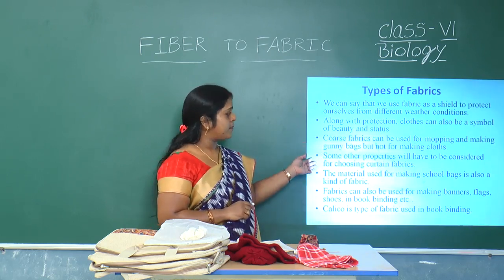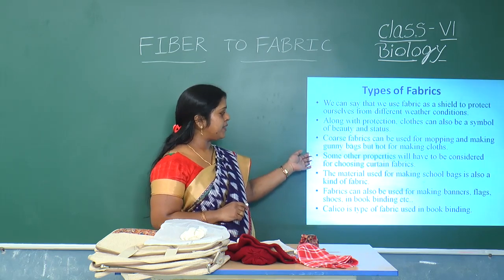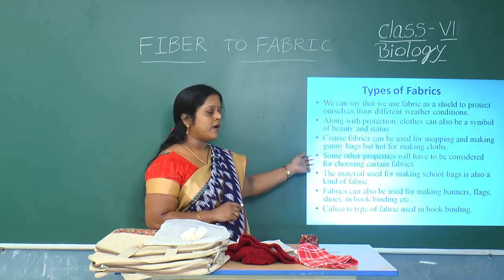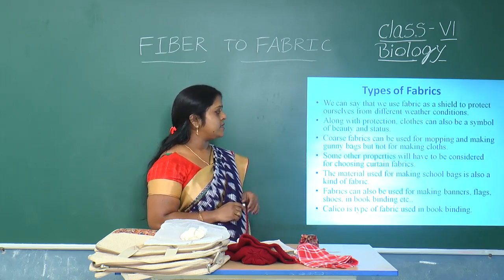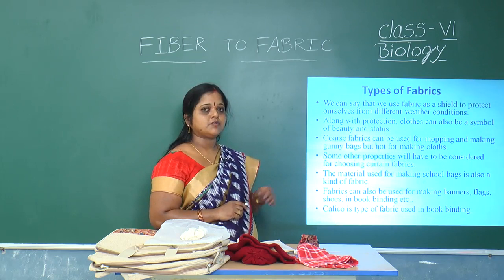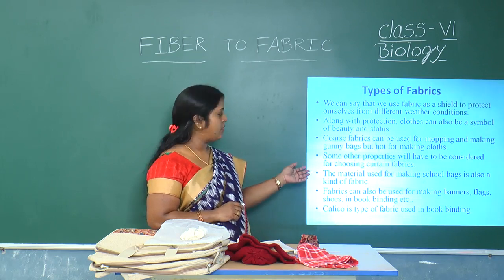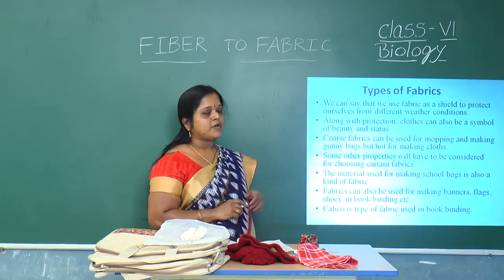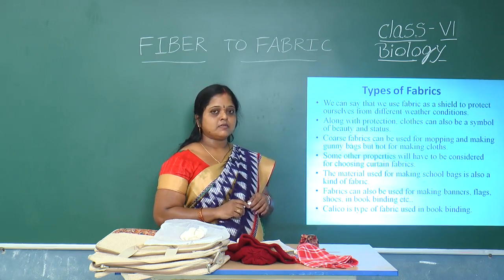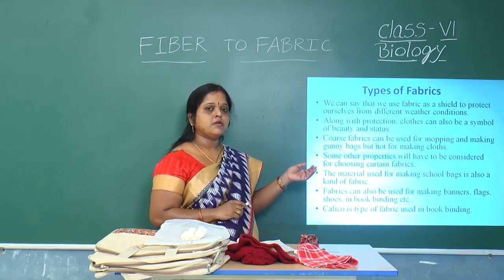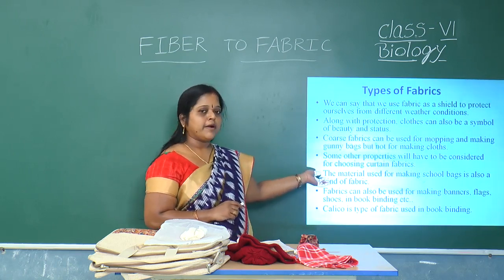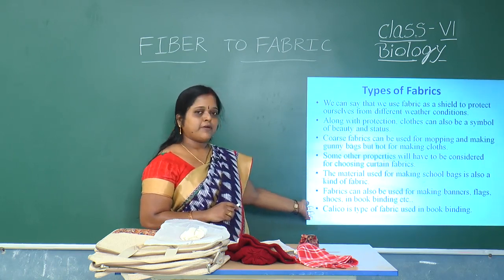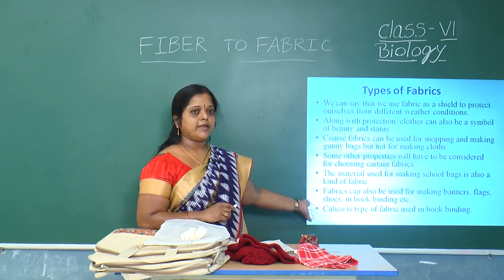Some other properties will have to be considered for choosing cotton fabrics. The material which is used for making school bags is also one kind of fabric. Fabrics can also be used for making banners, flags, shoes and book binding. Calico is a type of fabric which is used for book binding.